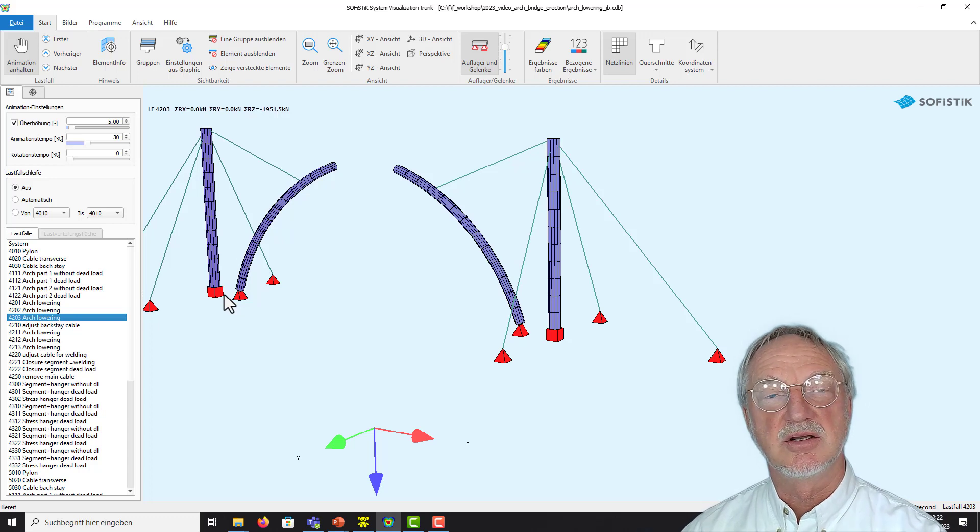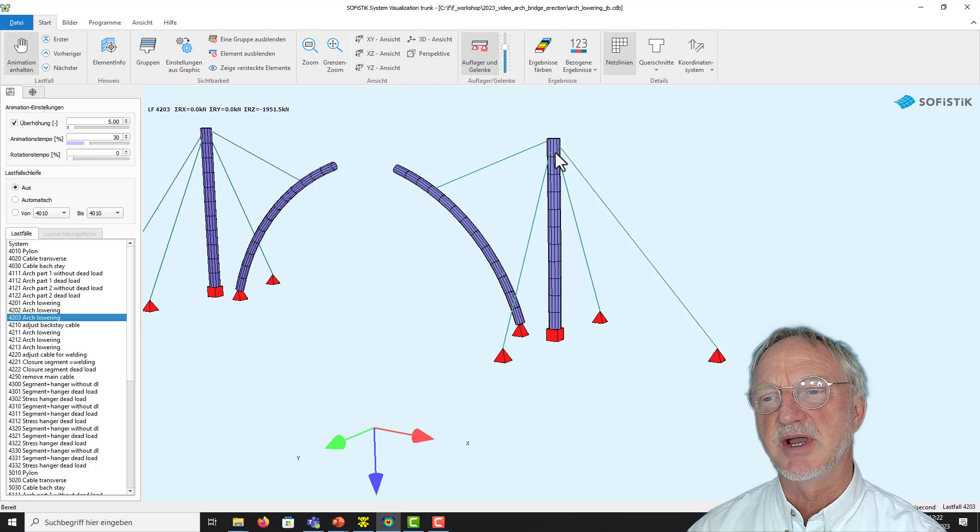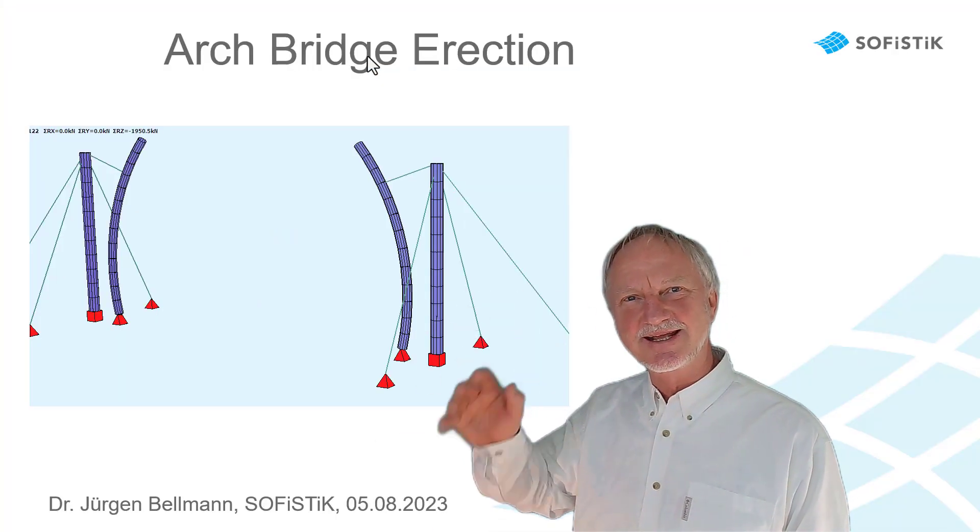Like in an incremental launching of a bridge. Of course if you want you can also add TH3 including cable sagging if you want. So thanks for listening and goodbye.